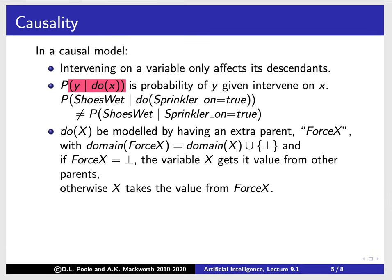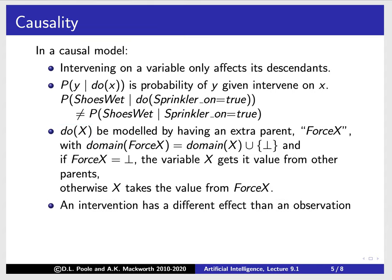So there's a difference: the probability of shoes wet when you turn the sprinkler on is different from when you observe the sprinkler on. Now let's look at how do(X) is going to be modeled. do(X) is modeled by having an extra parent node called force X, which forces X to be true or to have some particular value. The domain of force X is the domain of X together with a 'no force' option. When force X is 'no force,' the variable X gets its value from the other parents; otherwise X takes the value from force X.